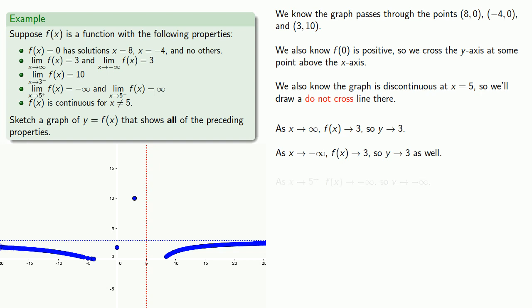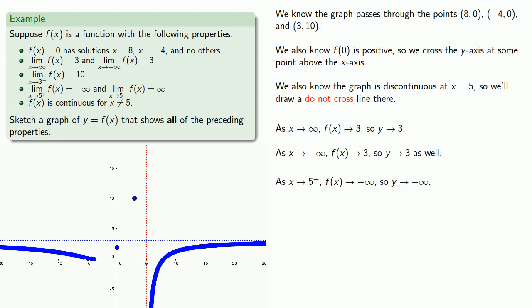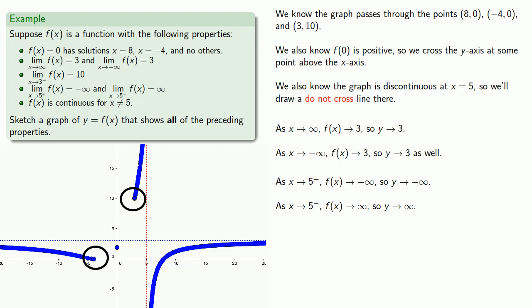As x approaches 5 from above, f of x goes to minus infinity, so the y-values crash downward — we start at (8, 0) and move toward x equals 5 letting the values crash. As x approaches 5 from below, f of x goes to positive infinity, so starting at (3, 10) and moving toward x equals 5 the y-values get higher and higher. Finally, since the graph is continuous, we join these two segments through the point on the y-axis, and our final graph looks something like this.